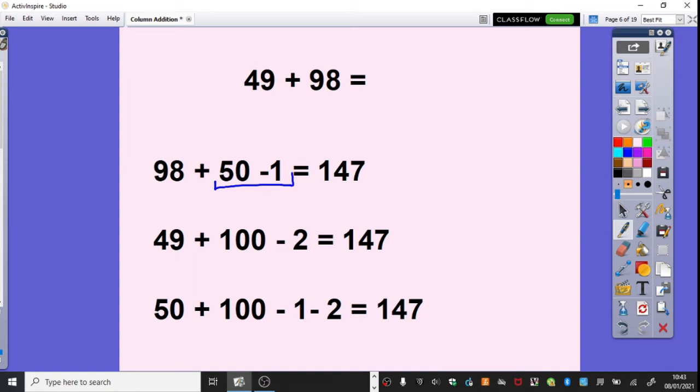We're obviously close to 100 here with 98. So we've got our example here of adding 100, subtracting 2 because we had 2 too many. And finally,